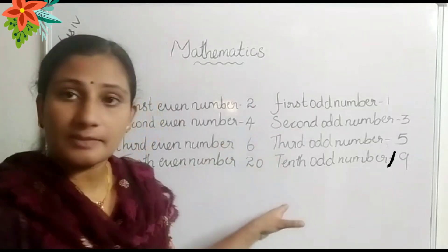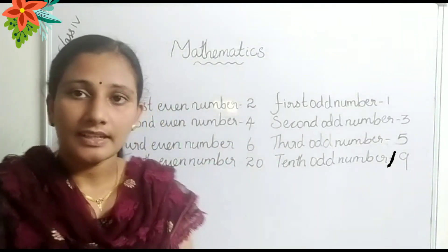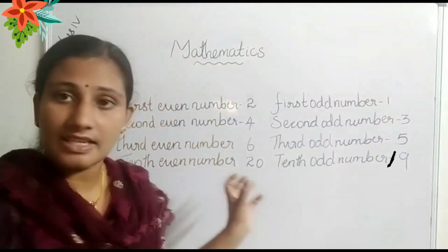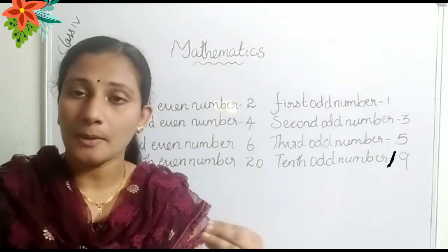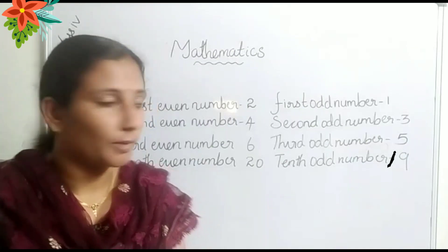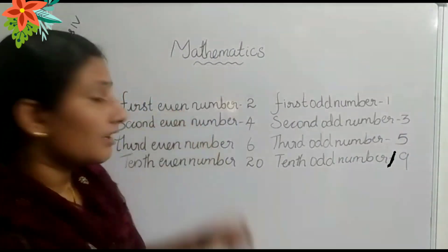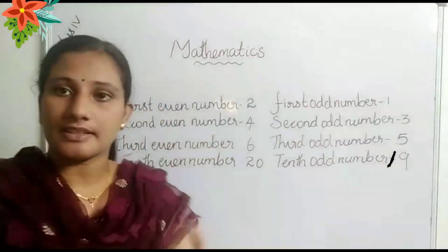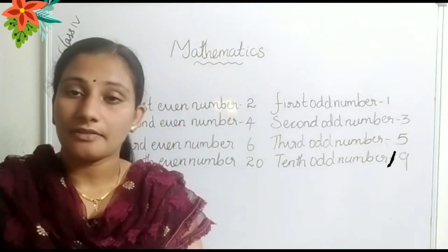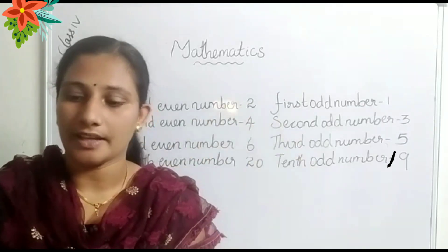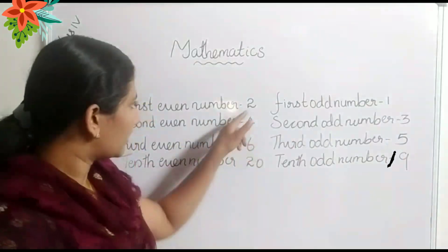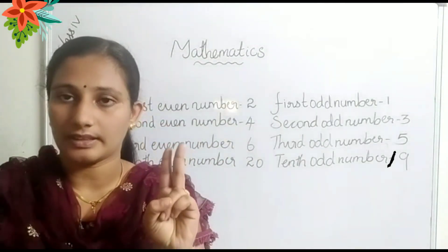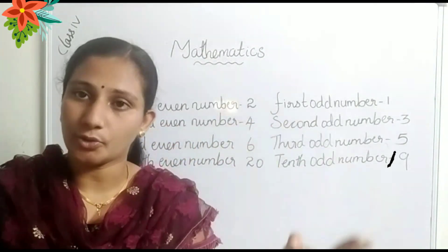Do you see anything special about these numbers? Any peculiarities or anything special about these numbers? The first even number means the double of that number. First even number is 2 — that is double of 1, which is 2. Then second even number: 2 is second, and double of 2 is 4.